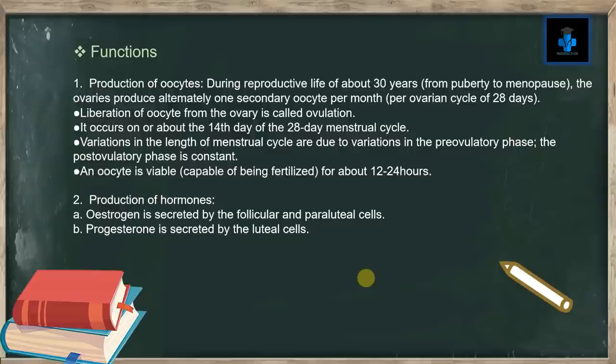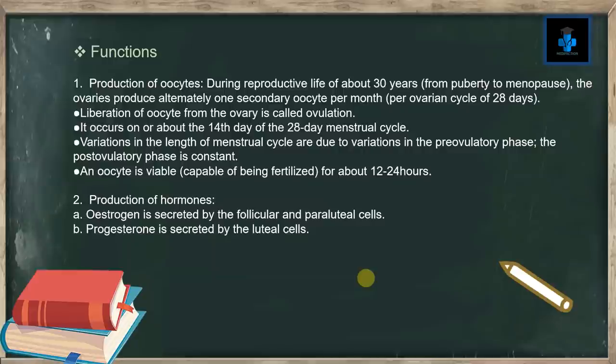Functions: number one, production of oocytes. During the reproductive life of about 30 years, that is from puberty to menopause, the ovaries produce ultimately one secondary oocyte per month, that is per ovarian cycle of 28 days. Liberation of the oocyte from the ovary is called ovulation. It occurs on or about the 14th day of the 28-day menstrual cycle. Variations in the length of the menstrual cycle are due to variations in the pre-ovulatory phase; the post-ovulatory phase is constant.